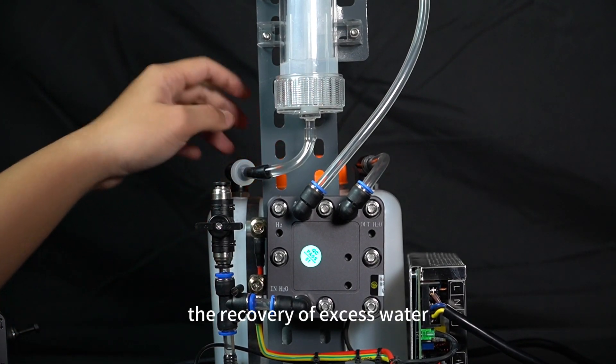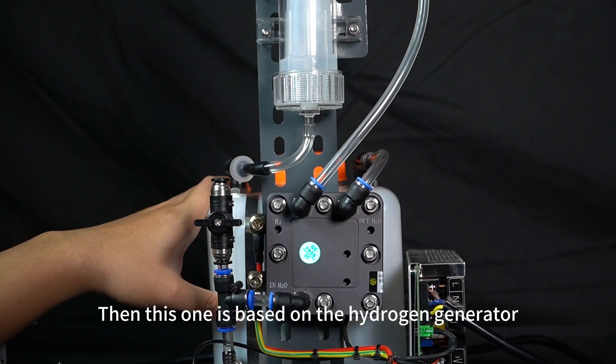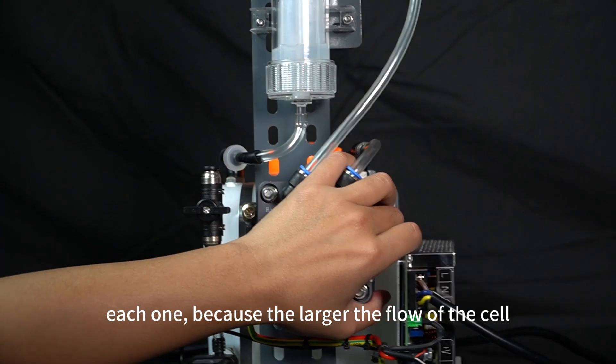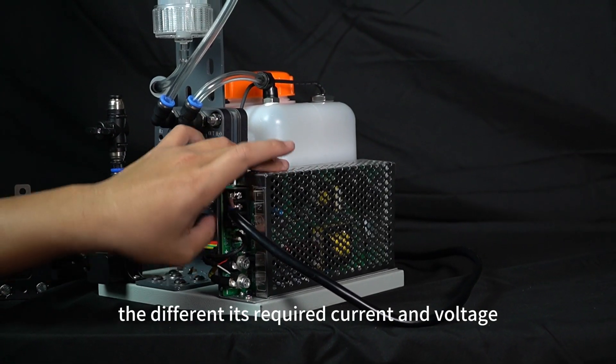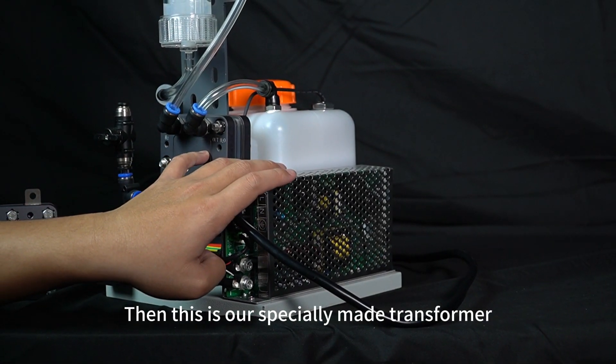This one is based on the hydrogen generator. Because the larger the flow of the cell, the different its required current and voltage. Then this is our specially made transformer, and its output is already connected here.